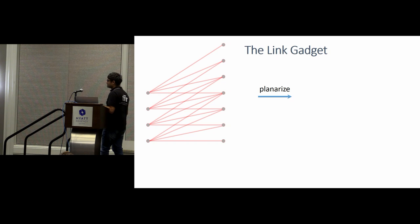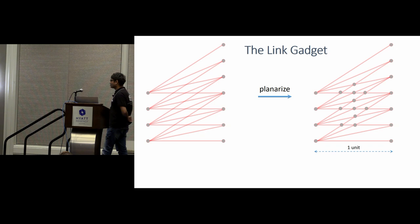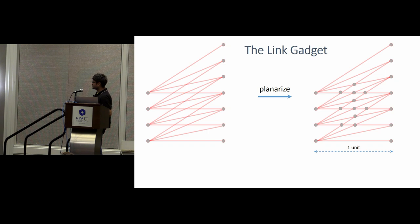This is all the same as Mulmuley and Shah up to this point. Now, so, this is their link gadget. It's a bipartite graph, and it is non-planar. How we planarize this is like this. Wherever you connect them using straight lines, draw them on a piece of paper, separate it by one unit, connect them using straight lines, and wherever two straight lines intersect, you add a new vertex. And this seems like a very naive and stupid thing to do, and why did Nikolova's conjecture remain open for so long?